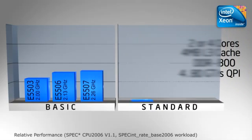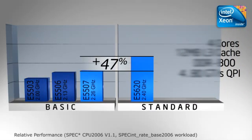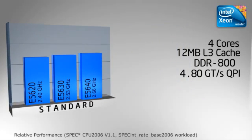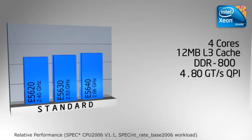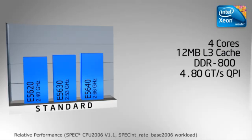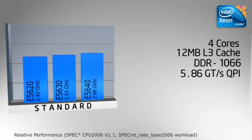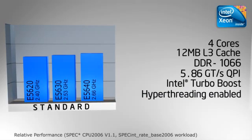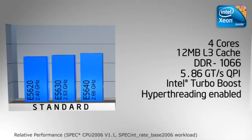The first processor in the standard segment performs up to 47% better than the best performing processor in the basic segment. Based on the new Intel Xeon processor 5600 series, the standard segment is intended for mainstream applications. Each processor includes four cores, a larger 12 megabyte L3 cache, and greater system bandwidth. With Intel Turbo Boost and hyper-threading enabled, these processors are the perfect choice for customers seeking a balanced mix of performance, value, and advanced features.